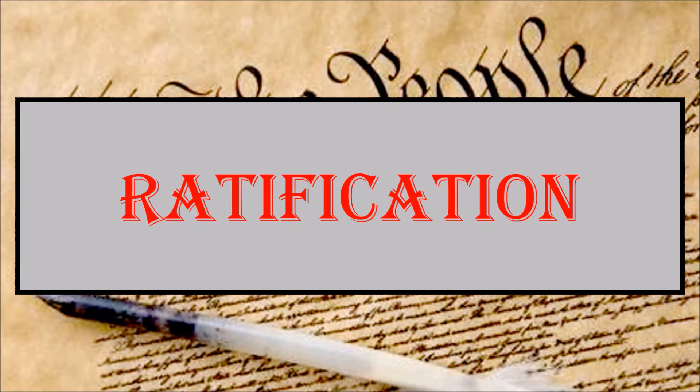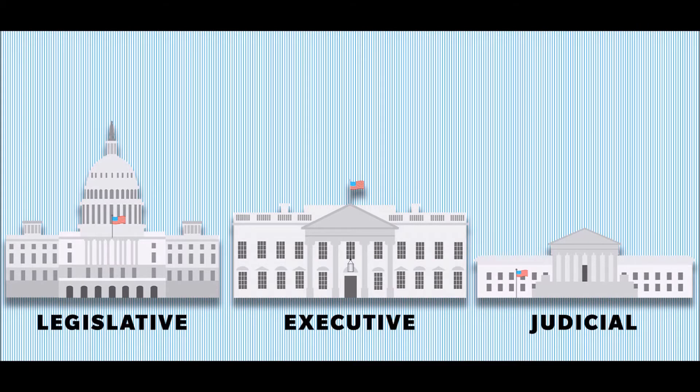Federalist 51 explains why we have a separation of powers that is included in the Constitution — and this, of course, is your legislative, executive, and judicial branches of government.